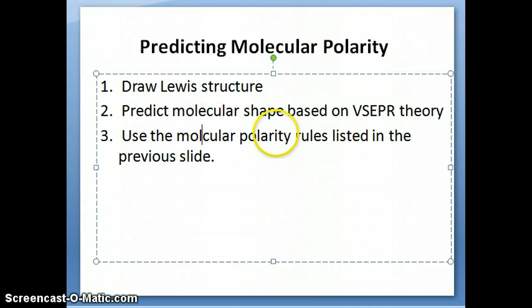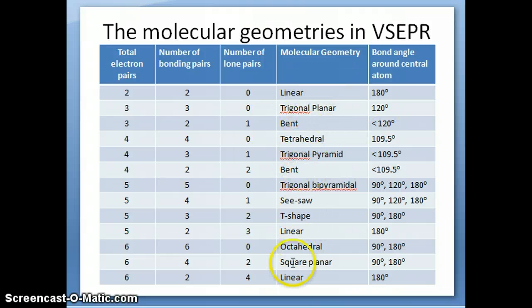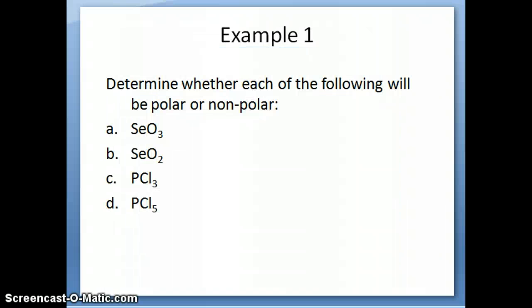The way you want to go about using the rules that I just showed you is in the following steps. If you're asked to predict molecular polarity, basically what you have to do first is draw the Lewis structure. So everything starts from the Lewis structure. And then remember you learned how to predict molecular structures or molecular shape using VSEPR theory. So you want to use that again here to predict what molecular structure is for the molecule or the ion. And then lastly, you can use those molecular polarity rules that I just talked about in the previous slide to help you determine whether a molecule is polar or non-polar.